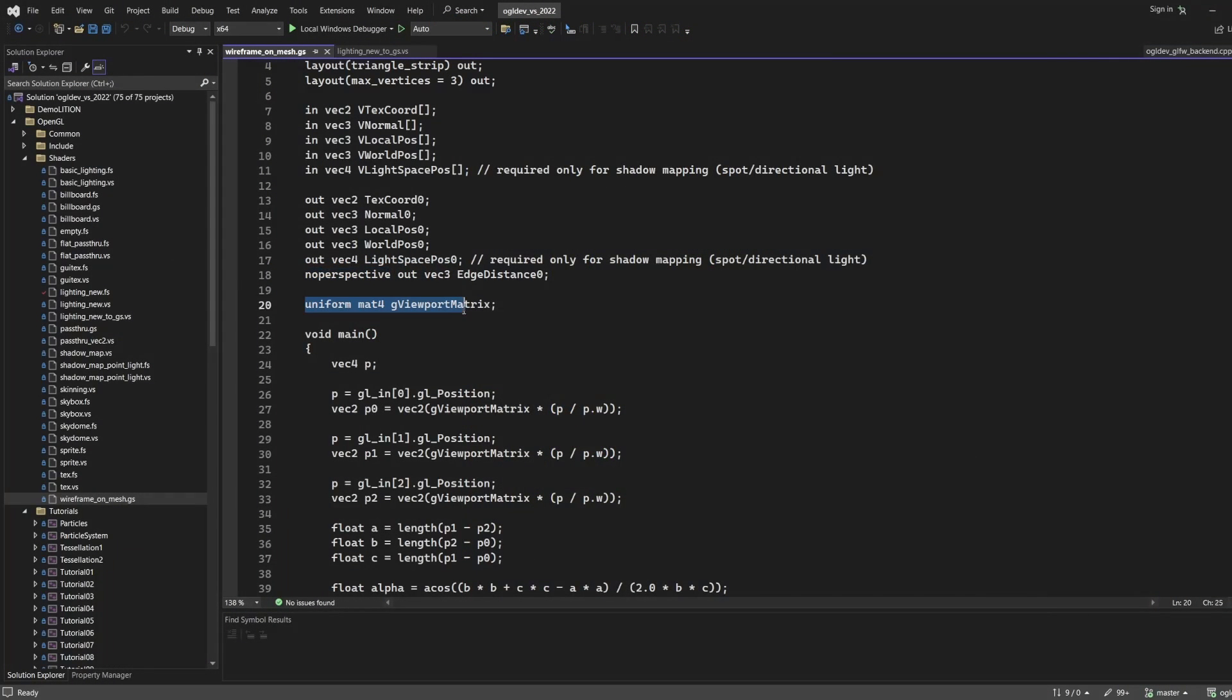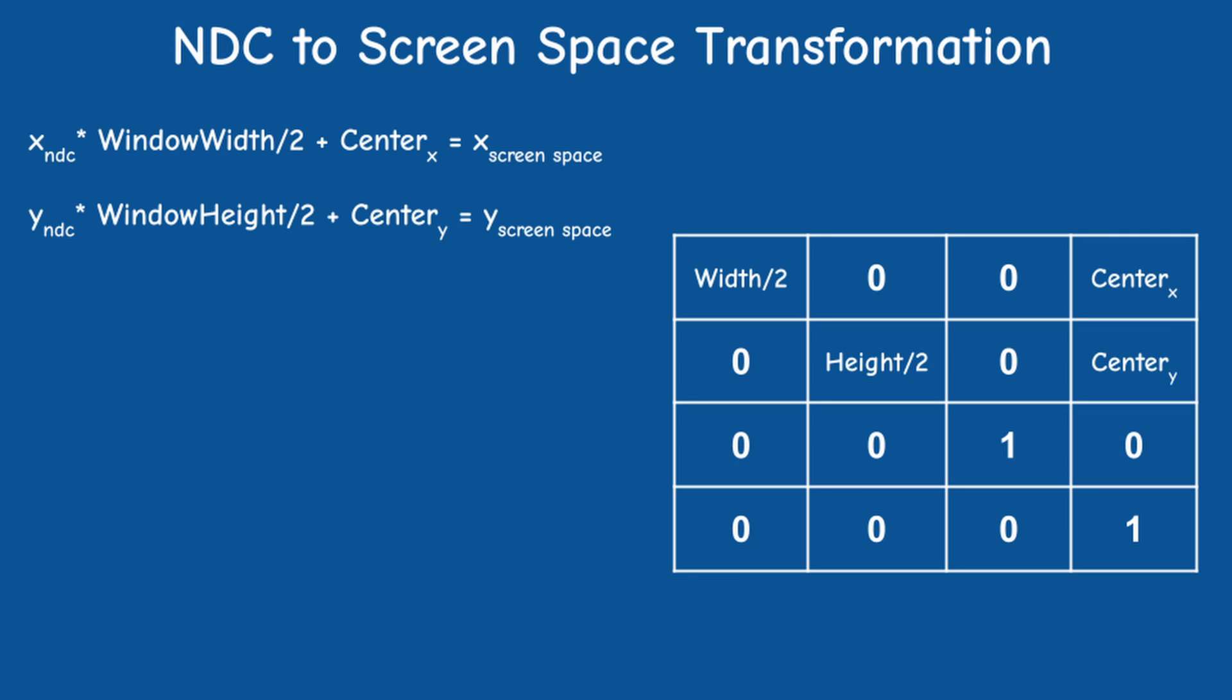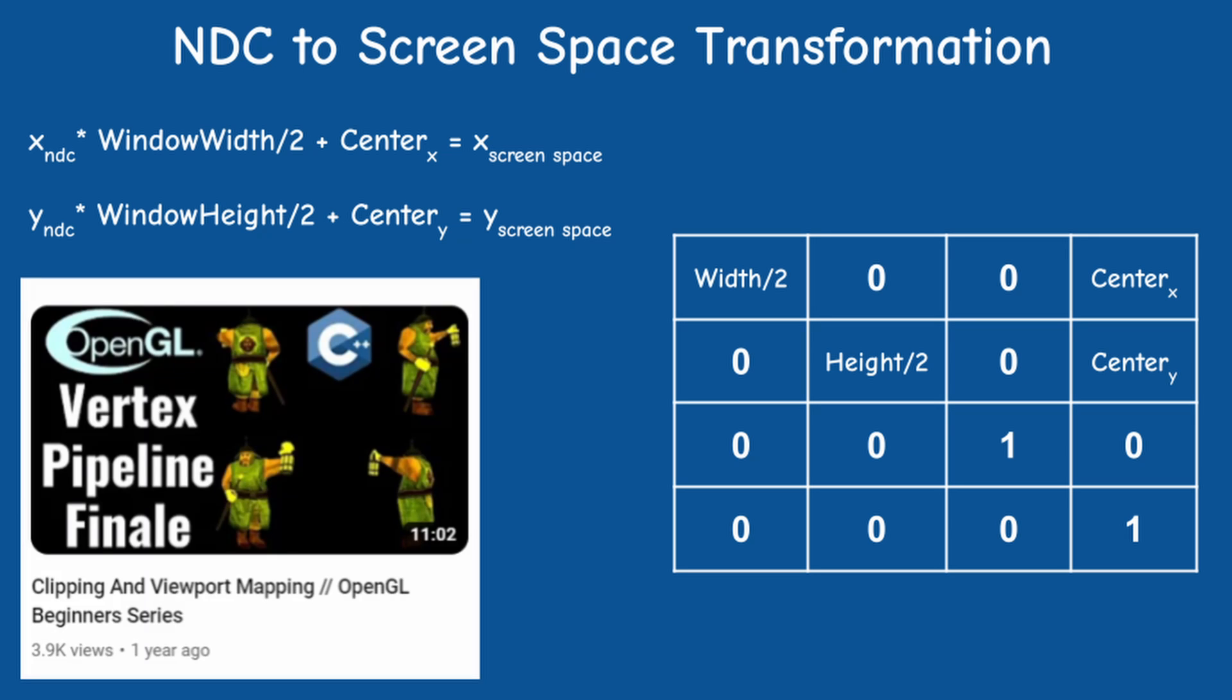Next we have a uniform for the viewport matrix which transforms from NDC space to screen space. Usually the OpenGL pipeline handles this transformation for us, but now we actually need the screen space coordinates so the application must provide us with this matrix. To transform from NDC to screen space, we have to multiply x in NDC by half the width of the window and add the center. We do the same with y using the height. This can be conveniently packaged in this matrix.